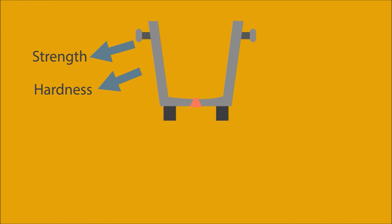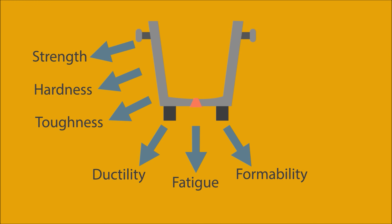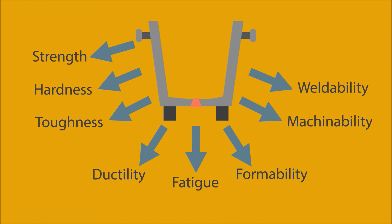Hardness — the ability to resist plastic deformation, usually via penetration, also described as resistance to scratching or abrasion. Toughness — the ability to absorb energy. Ductility — the ability to deform without fracture. Fatigue — the weakening of metal caused by repeatedly applied load. Formability — the ease with which metal can be molded. Machinability — the ease with which metal can be processed with cutting tools. Weldability — the ease with which metal can be joined. Corrosion resistance — the ability to withstand chemical reaction through oxidation.